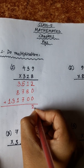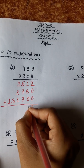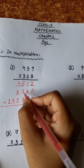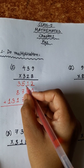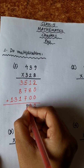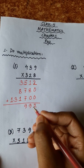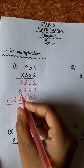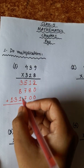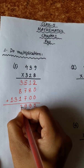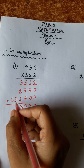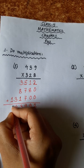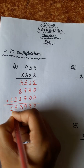2, 8 plus 1 is 9. 9, 7 plus 7 is 14, plus 5 is 19, carry 1. 1 plus 1 is 2. 8 plus 2 is 10, plus 3 is 13, carry 1. 3 plus 1 is 4. Final answer: 143,992.